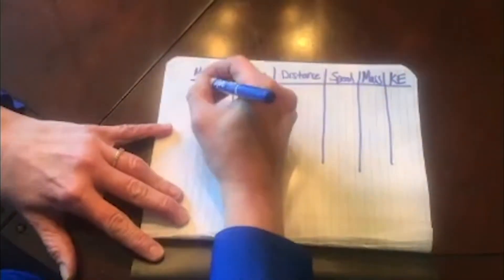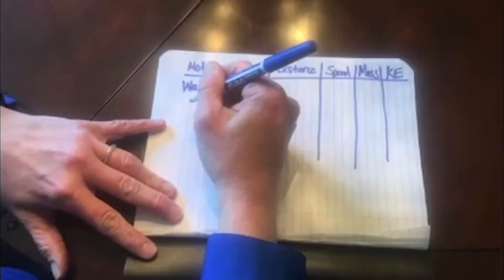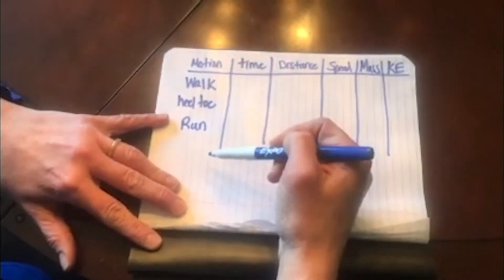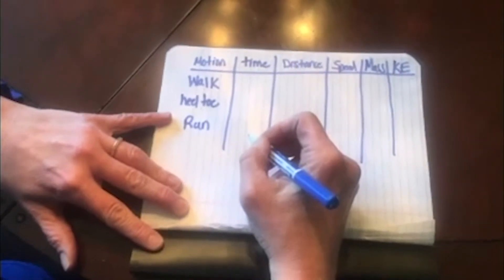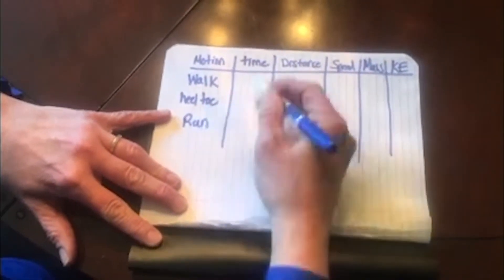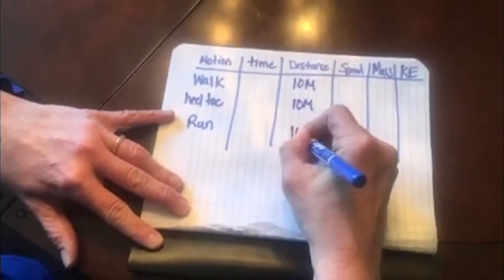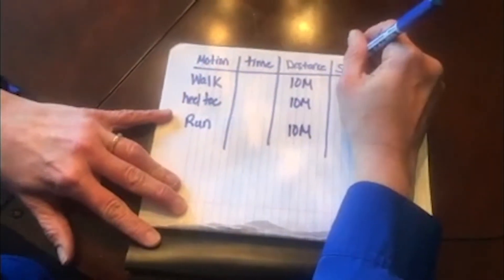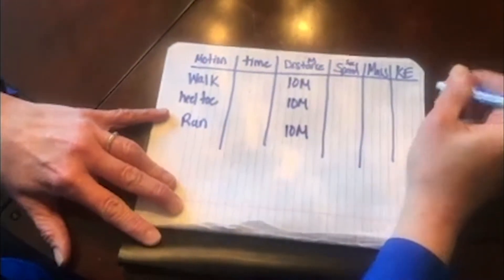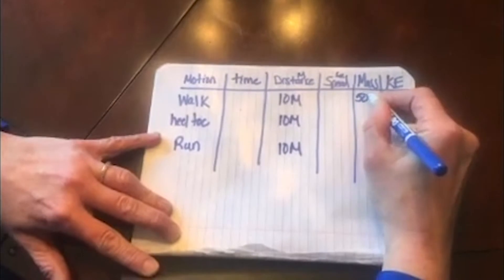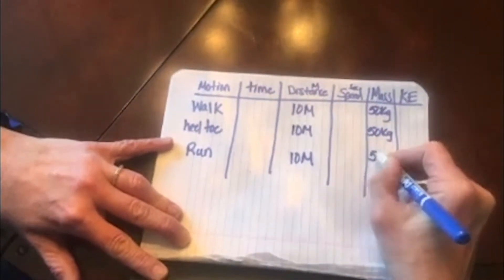So I'm going to create my data table with these items. The different motions I can do are: I can walk, I can walk heel-toe, and then I can run. That's three different motions that should create three different speeds. We'll have to calculate our time going outside. Distance we want to be consistent, so we're going to use 10 meters for each motion. Speed will be calculated in seconds with distance in meters. And my mass I want to keep consistent because we're looking for a relationship between speed and kinetic energy, not mass. So I'm going to use 50 kilograms for my mass.